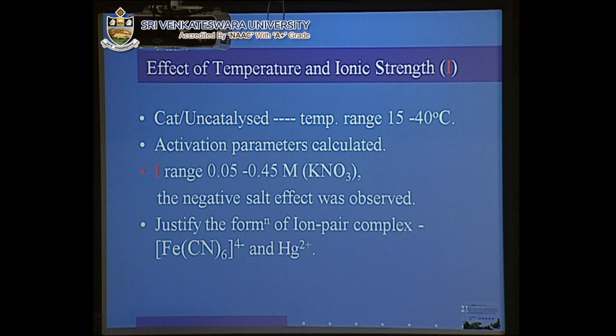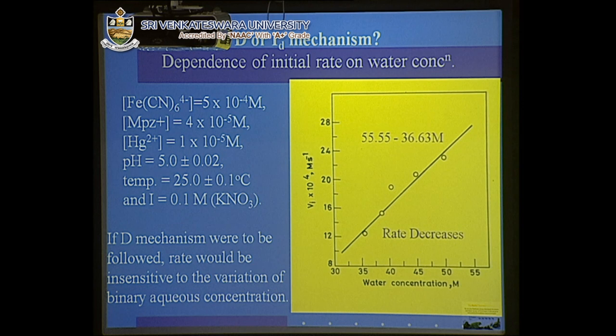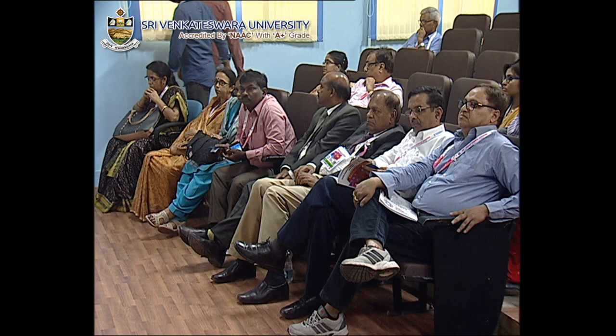This explains the drastic change in rate with respect to the catalyst. When doing kinetics, we need to study temperature as well as ionic strength dependence. The data gives the idea that the mechanism will be dissociative, and we need to find out whether it is really dissociative or interchange dissociative.